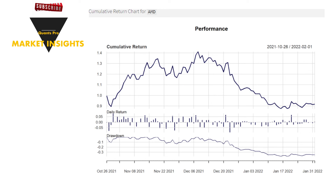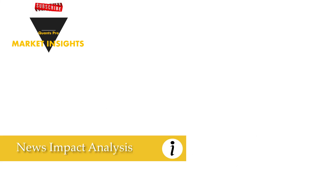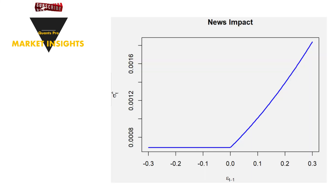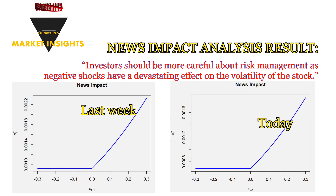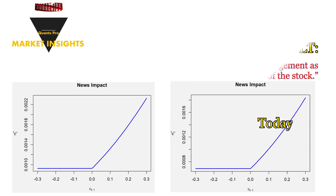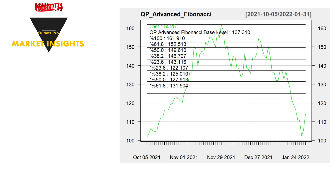One of the important analytics that Quants Pro offers is news impact analysis. With this method, negative asymmetry on the volatility of the stock exposed to any shock or information can be detected. The effect graph is given — when carefully examined, the effect of positive news on volatility is stronger. Comparing the current state of news impact versus last week, it can be understood that the news effect remained the same, indicating that the impact of negative shocks on stock volatility did not change significantly over the past week.